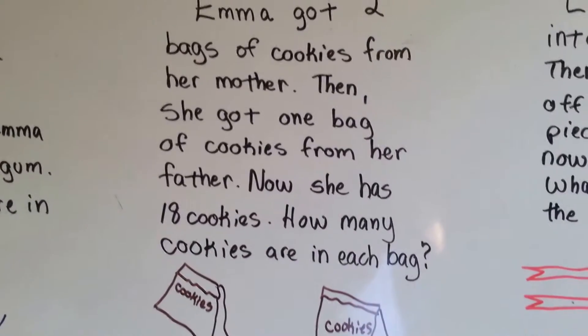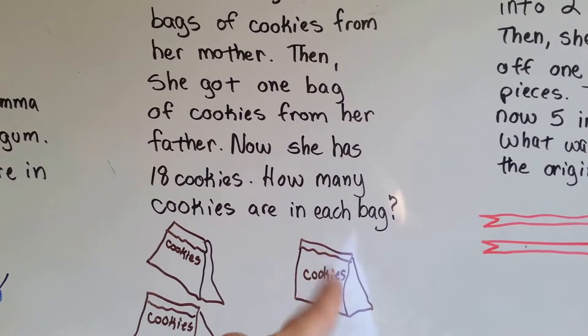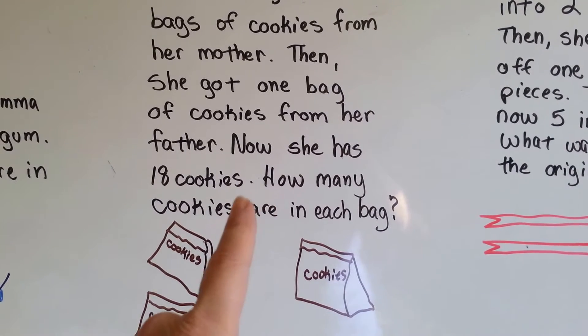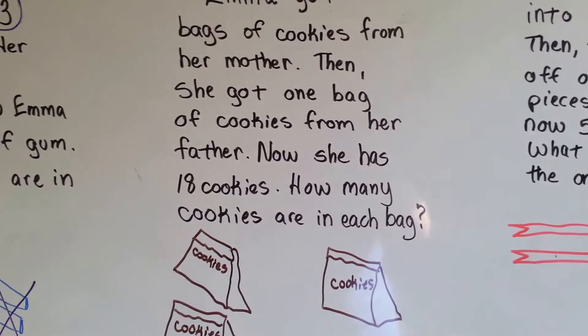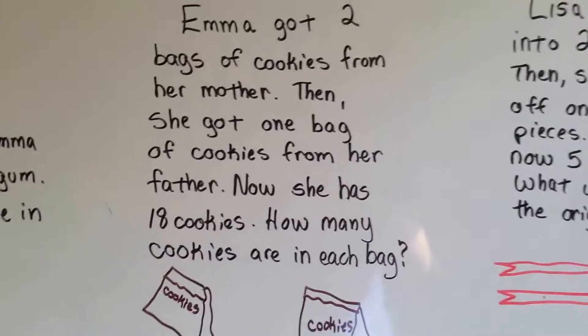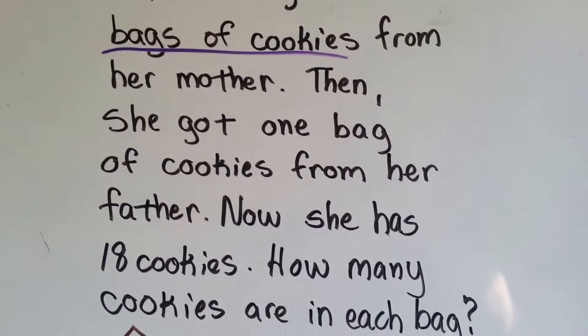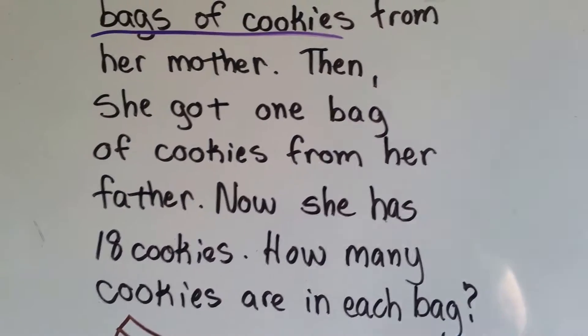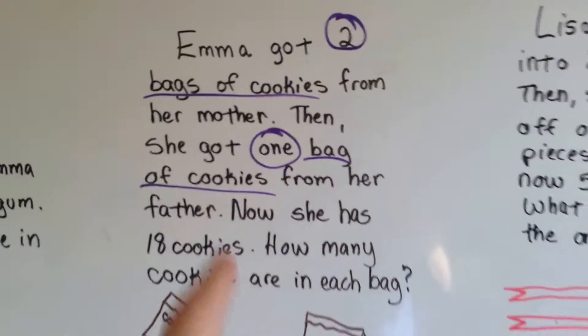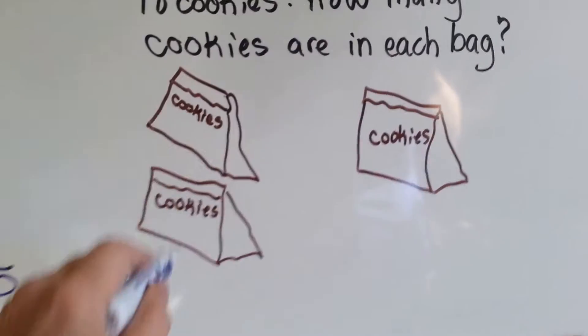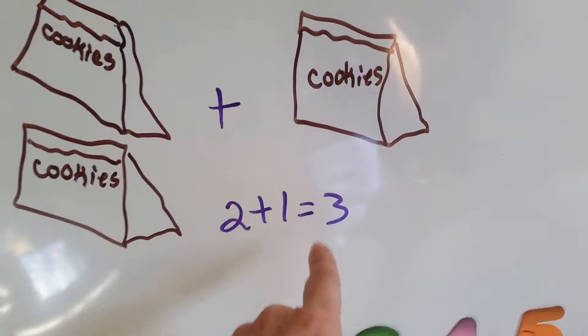Okay, so let's look at this one. Emma got 2 bags of cookies from her mother. Then she got 1 bag of cookies from her father. Now she has 18 cookies. How many cookies are in each bag? Alright. She's got 2 bags of cookies. And she's got 1 bag of cookies. So, we need to add those. 2 plus 1 equals 3.